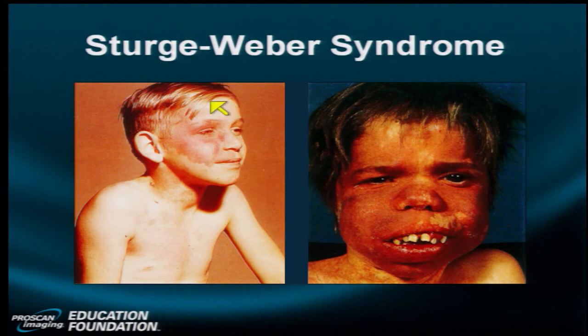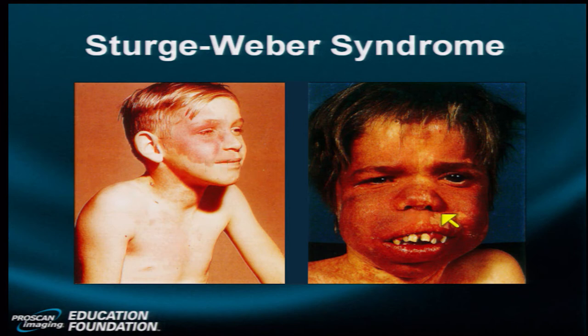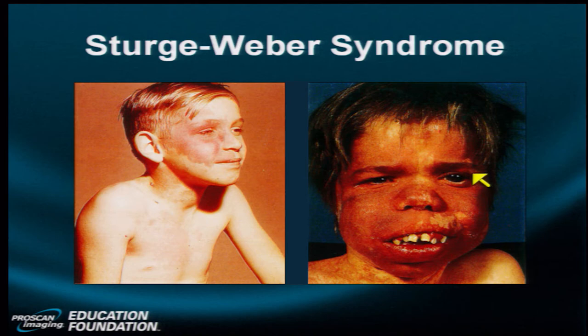Let's look at the visual and facial manifestations of Sturge-Weber. This young man demonstrates a port wine nevus in the trigeminal distribution, primarily in the first and second division with some third division involvement on the right side of the face. This unfortunate child has bilateral Sturge-Weber syndrome, more affected on the left side, where there is overgrowth of the left eye — buphthalmos or ox eye formation.